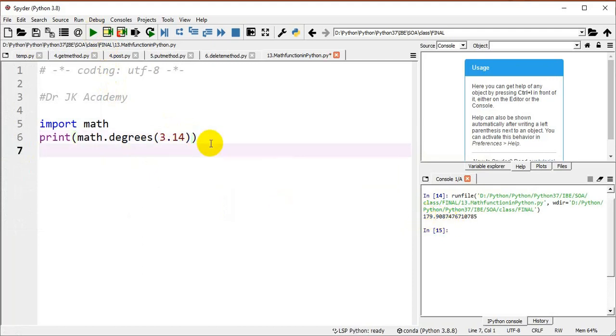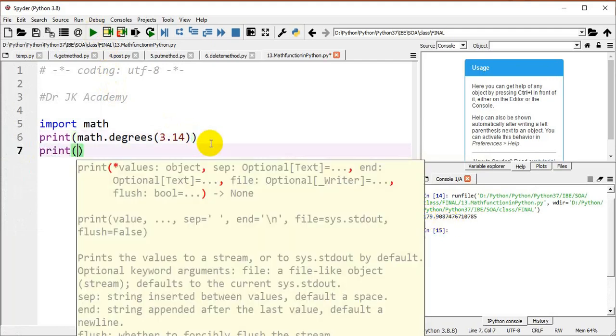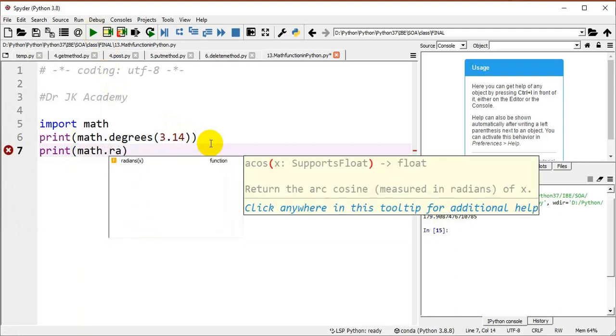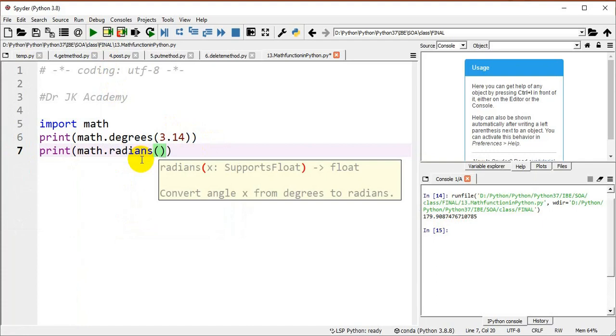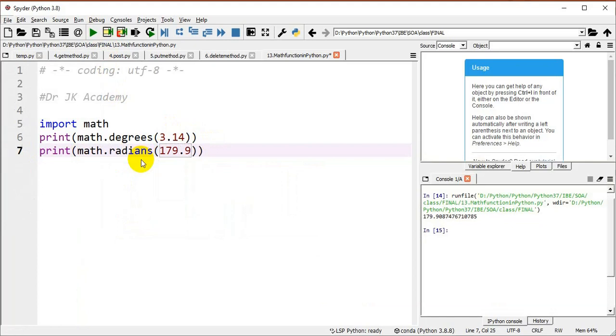Next, I am printing print math.radians(179.908). Now we will re-execute the program. So here it is 3.13.